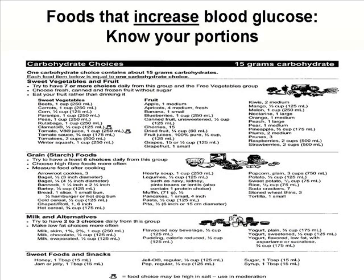Let's look at the list of foods that will increase your blood glucose — you need to know your portion. Your sweet and starchy vegetables will all increase your blood glucose; they are healthy foods. That includes beets, carrots, corn, parsnips, peas, rutabaga, clamato, tomato juice, and tomatoes — but only if you eat two cups or more of tomatoes. If you're eating less than two cups in one sitting, it's not going to increase your blood sugar. Also winter squash.